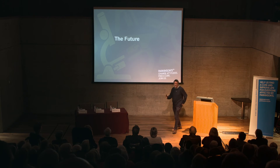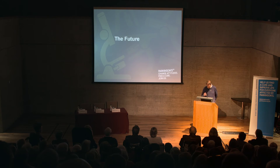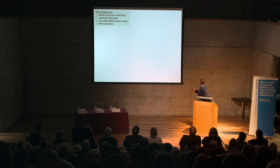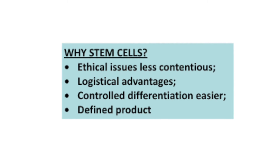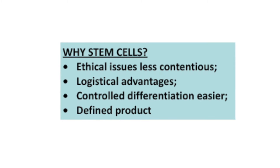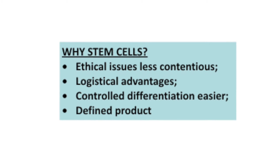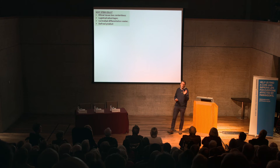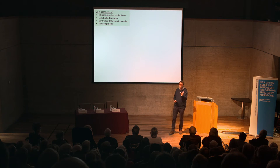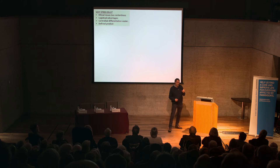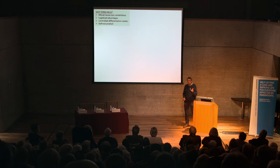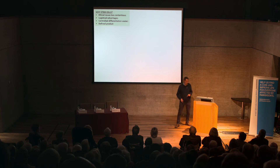Using fetal tissue has ethical and logistical problems, which is why this trial was always seen as a stepping stone to stem cells. To do a transplant with fetal tissue, I have to collect at least three to four fetuses, dissect out the brain region I want, keep it alive for four days in a particular media, and then transplant it. We've cancelled something like 17 operations because we haven't had enough tissue — so that's a major logistical problem.